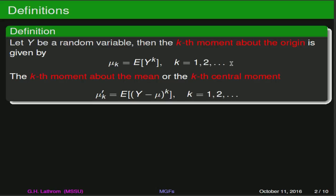We can also define the k-th moment about the mean, or the k-th central moment, first by taking the expected value of y, which we are familiar with as being our mu. Then for the k-th central moment, we'll take the expected value of y minus mu to the k-th power. Again, k is any positive integer.